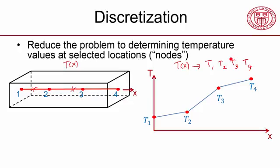In terms of terminology, these are called nodes. And these are called elements. So I've divided my domain into three elements. And I have four nodes.